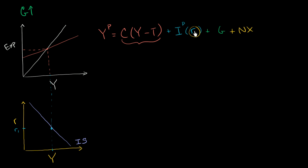If we kept trying this out for different real interest rates, we could plot more and more points along the IS curve. The intuition is: if real interest rates go up, planned investment goes down, this shifts down, and so we would have less GDP. At a higher real interest rate, you would have lower aggregate income. That's how we actually think about plotting our IS curve.